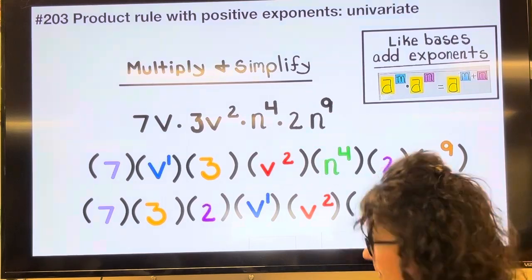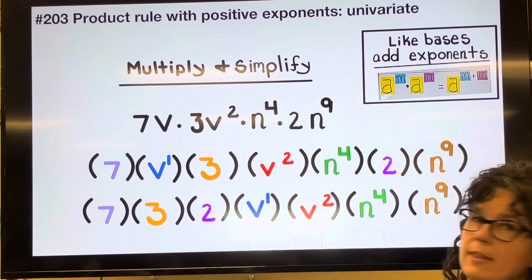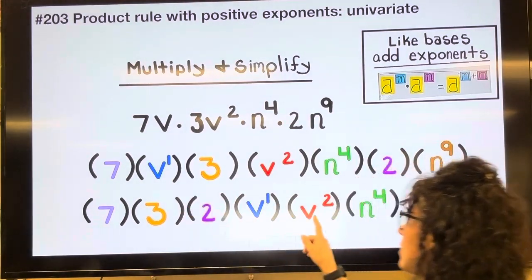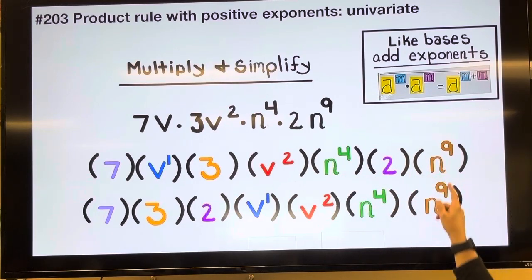Okay, so here I have 7 times 3 times 2 and then the V's next. So V to the first times V to the second and then N to the fourth times N to the ninth.